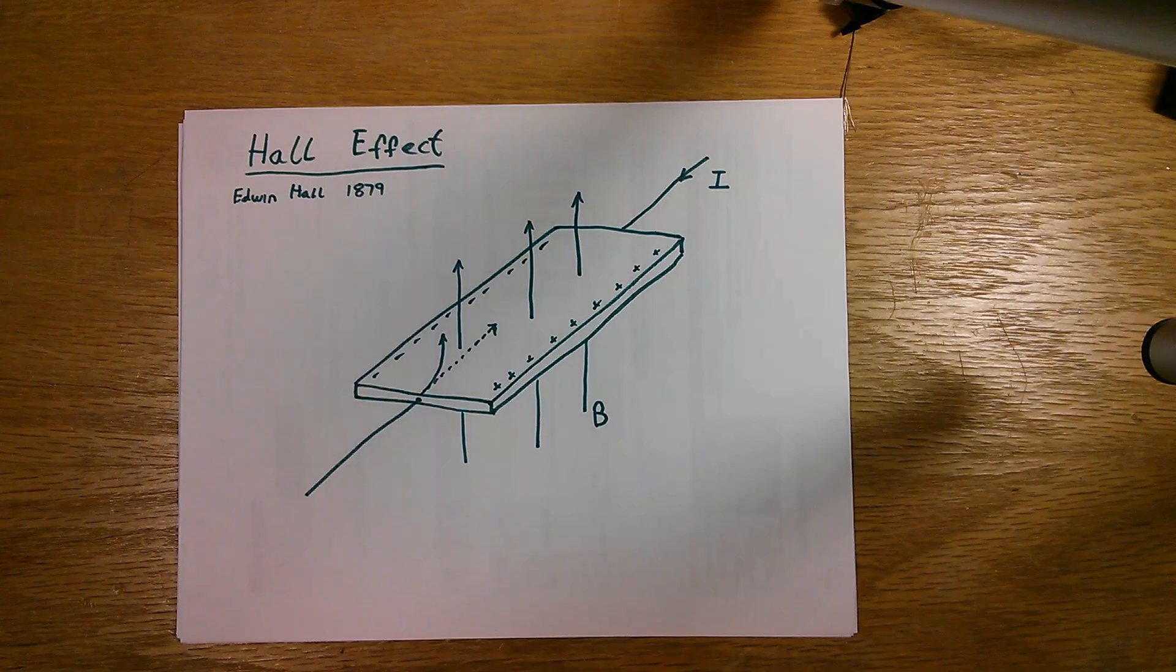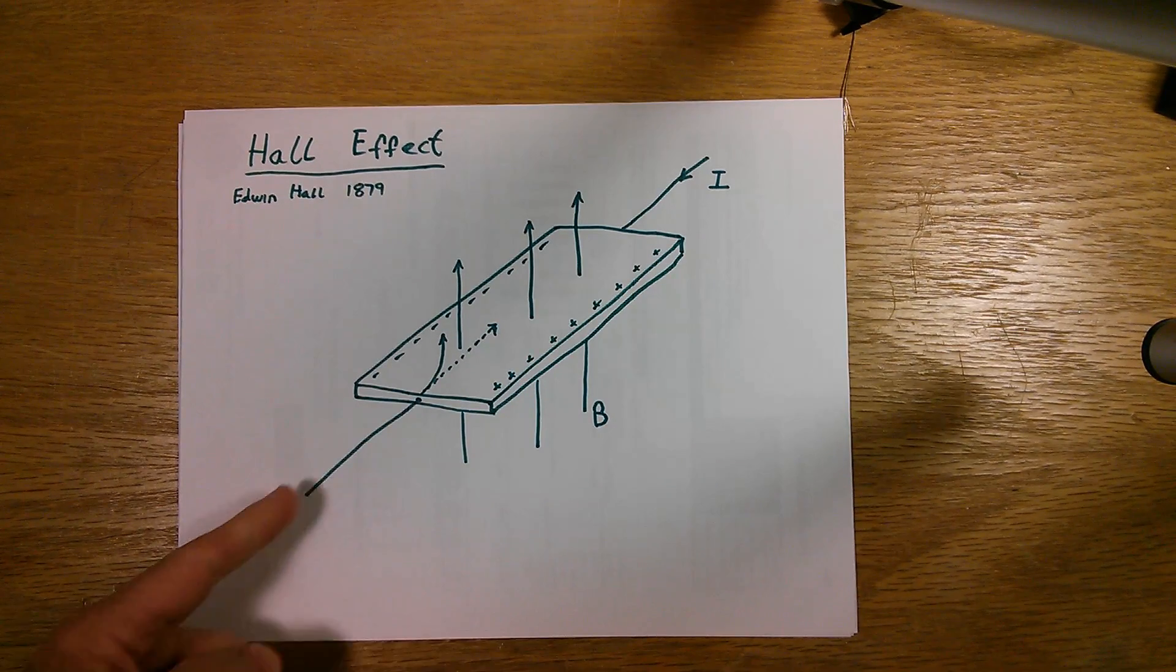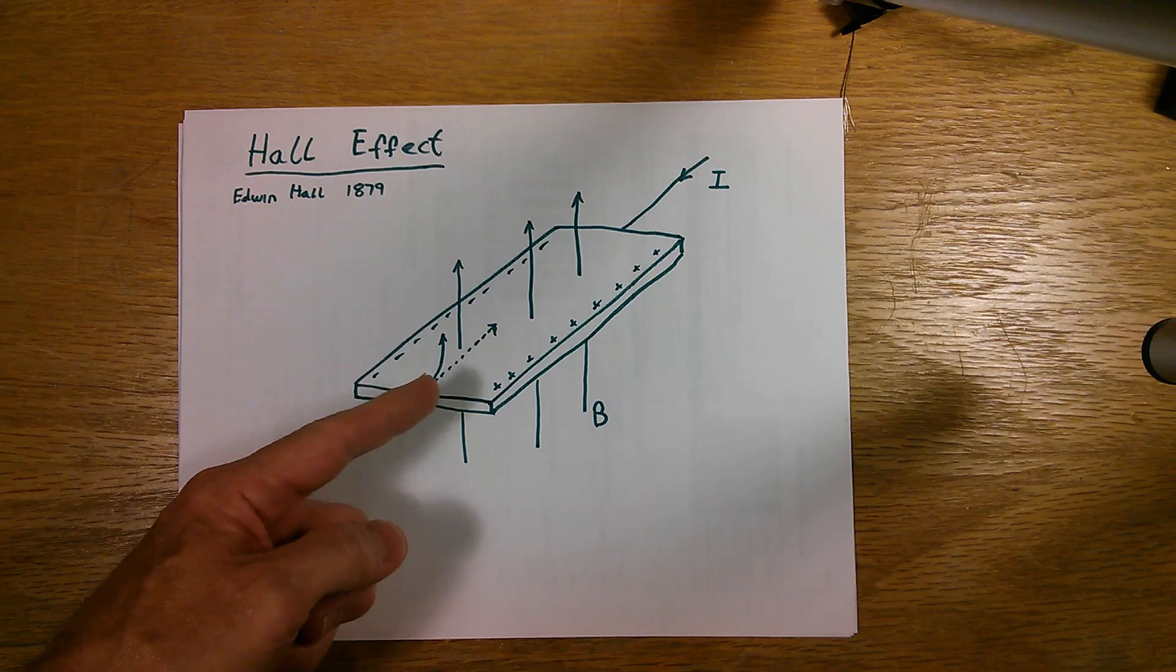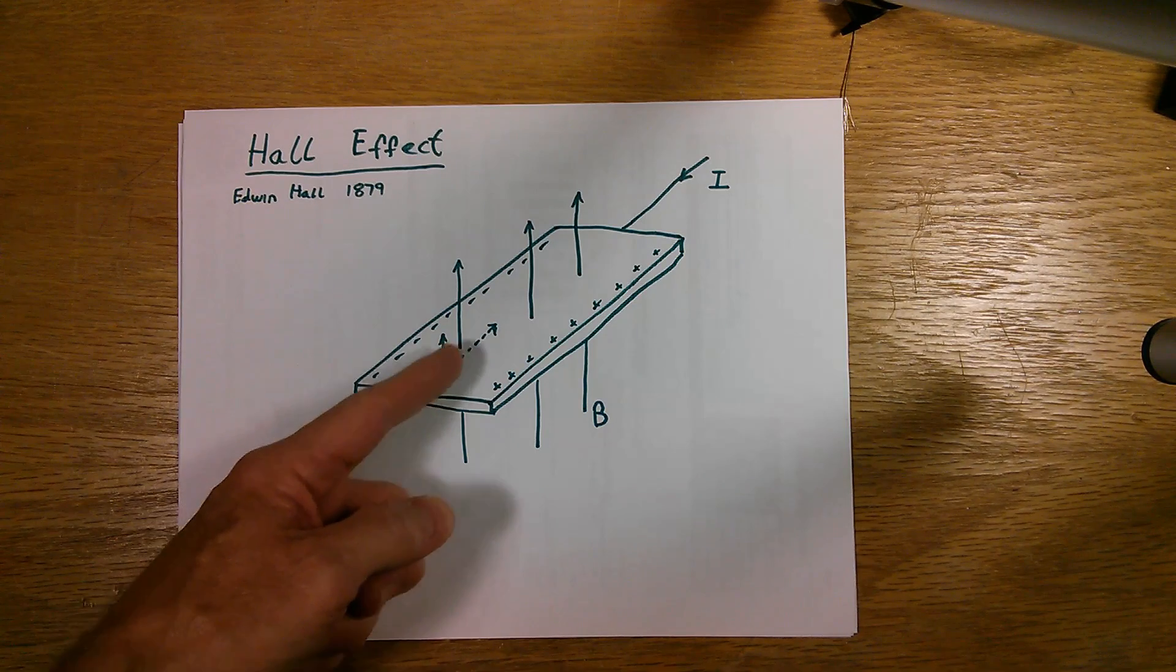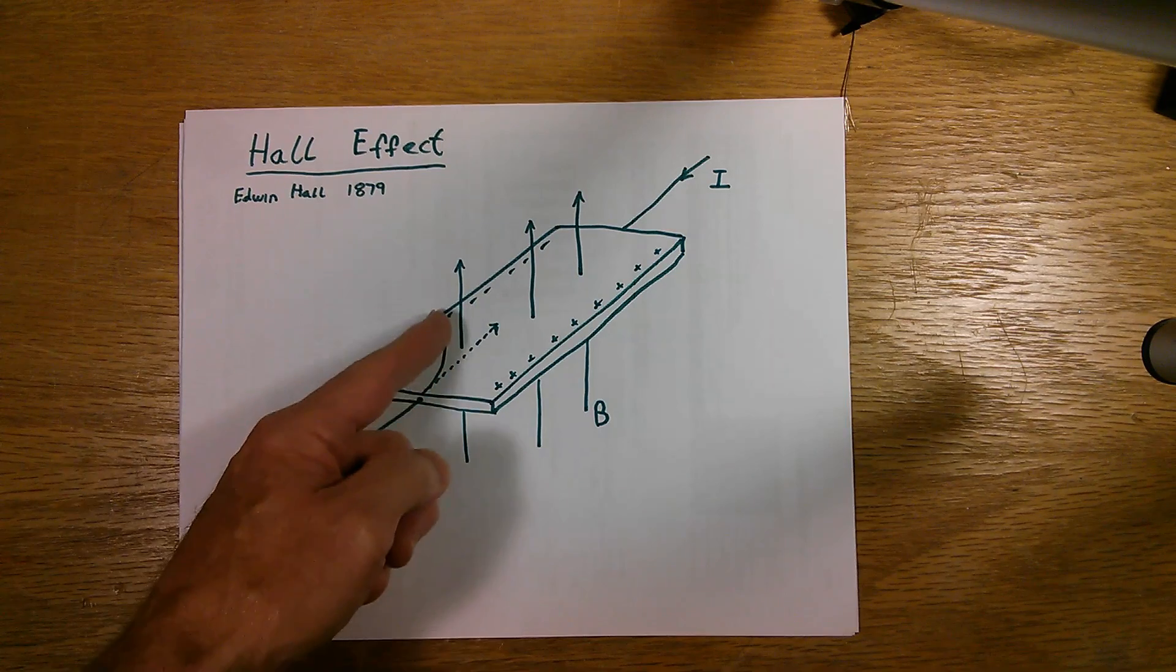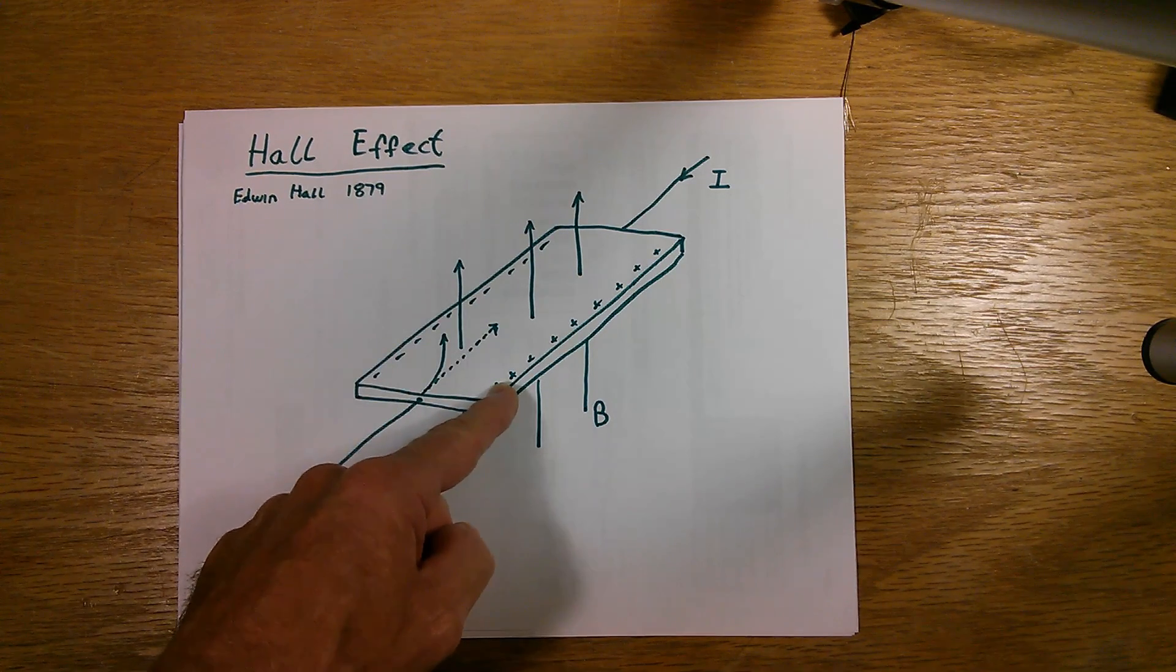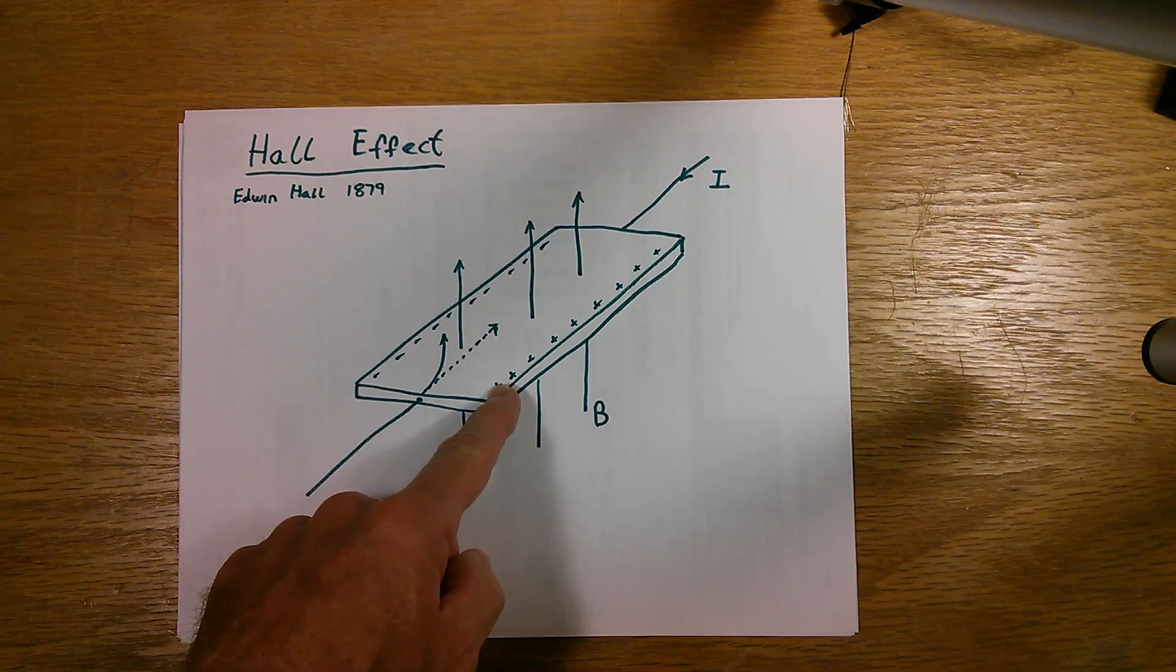The electrons are moving this way and they feel an effect, a force, on them by the magnetic field and they deflect off to the left here. And consequently, the holes, the positively charged particles, end up on this side.